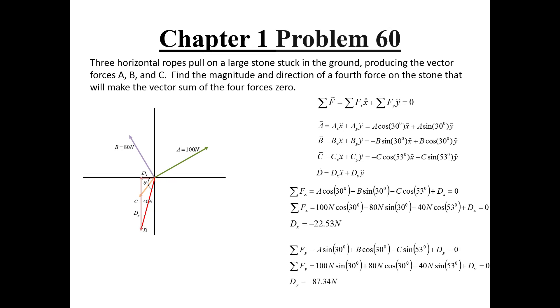To solve for the magnitude of the D vector, we take the square root of the sum of the squares of the components. Doing this tells us that the magnitude of the fourth vector needs to be about 90.2 newtons.